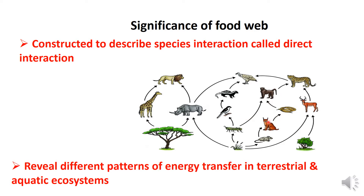For example, which organisms are herbivores or plants? What kind of organism is present? The food web helps identify species and their direct interactions.